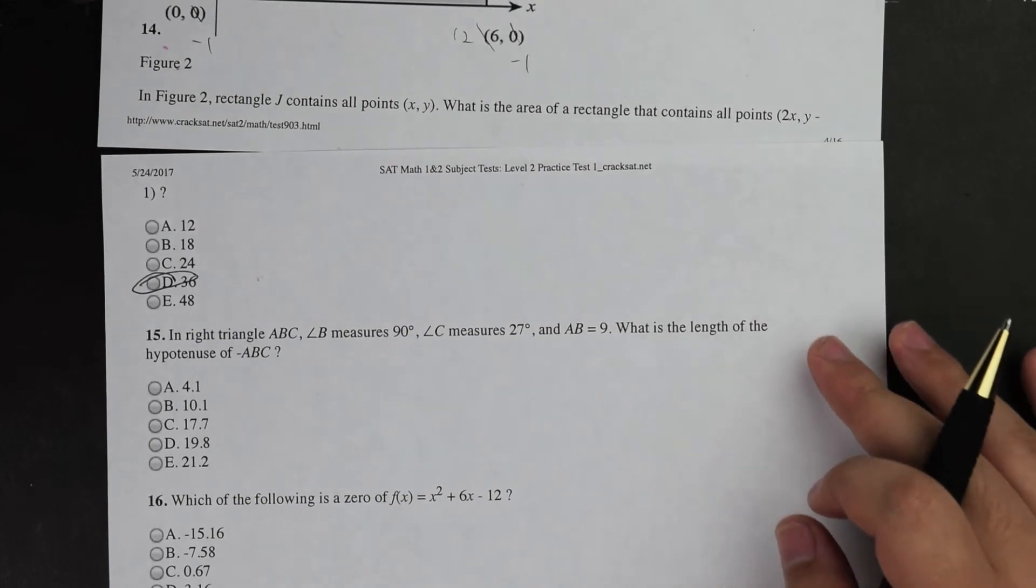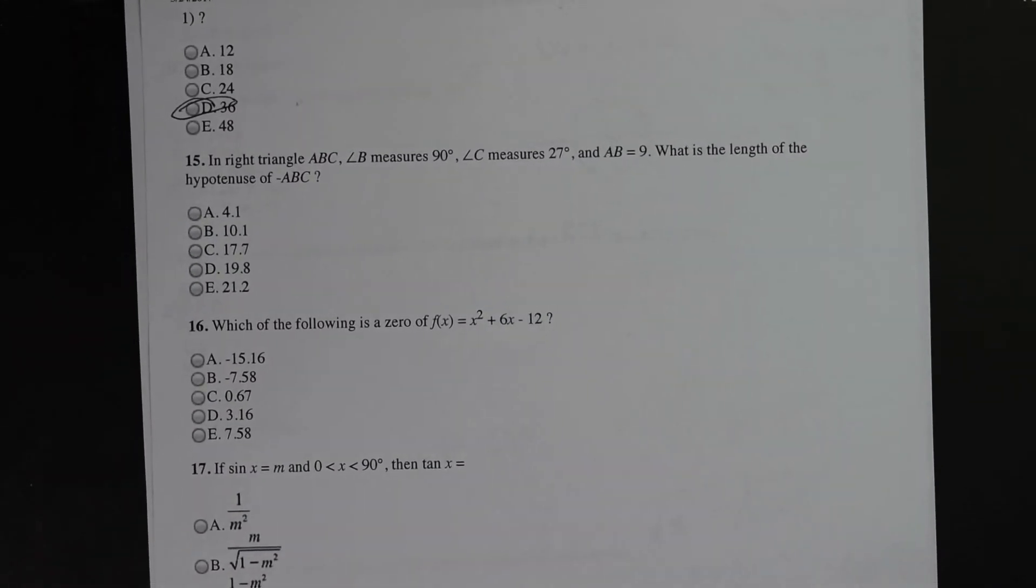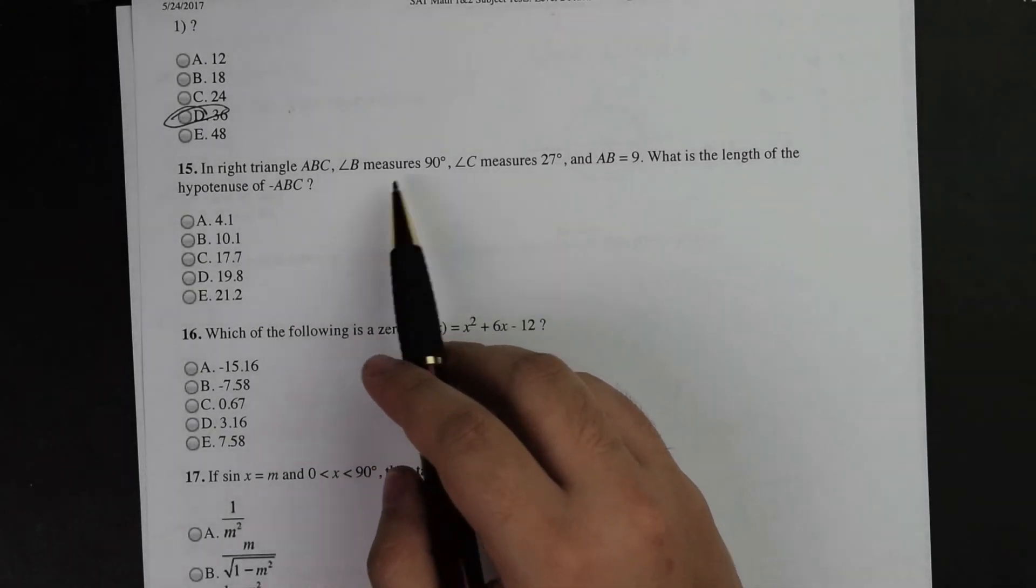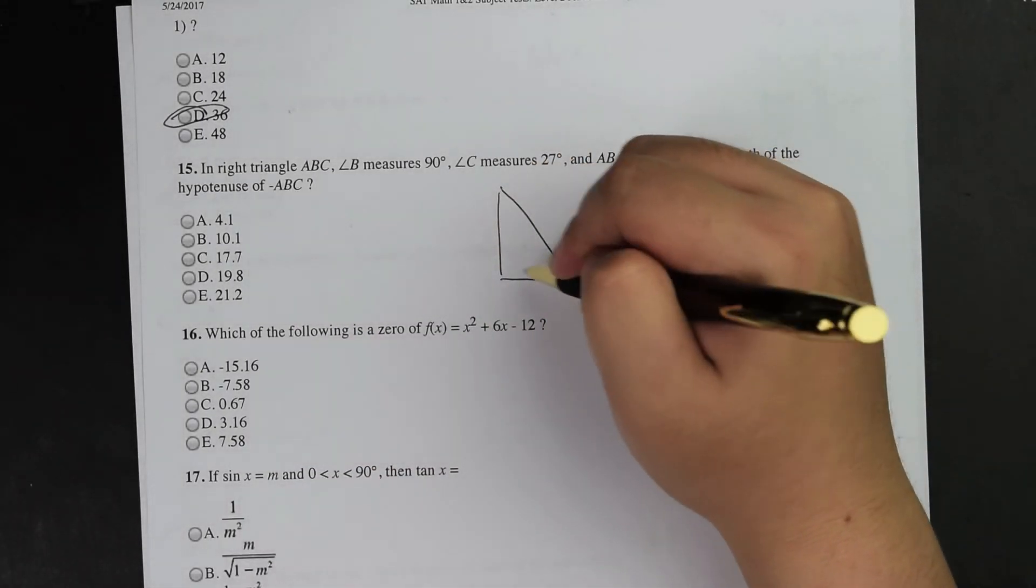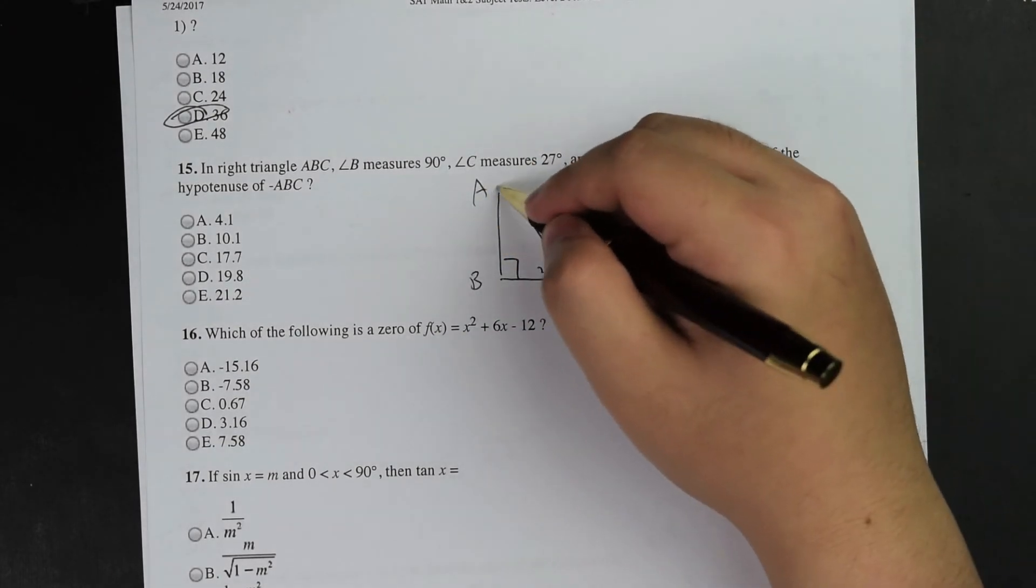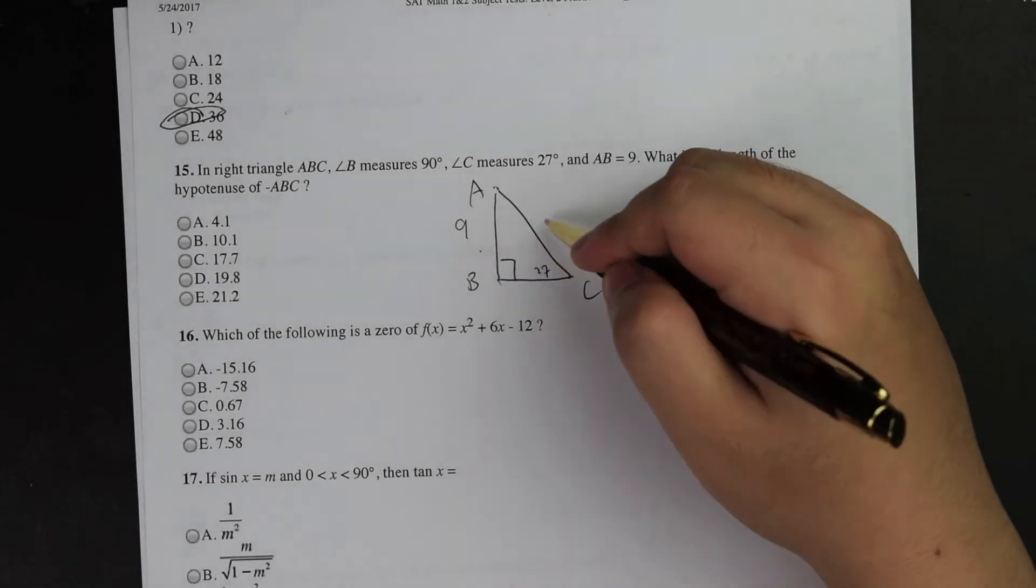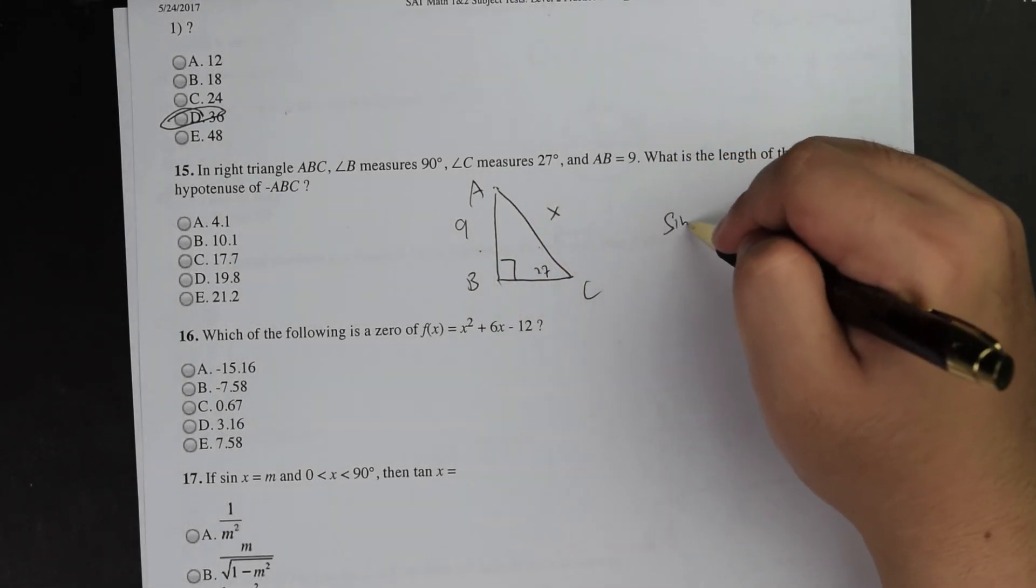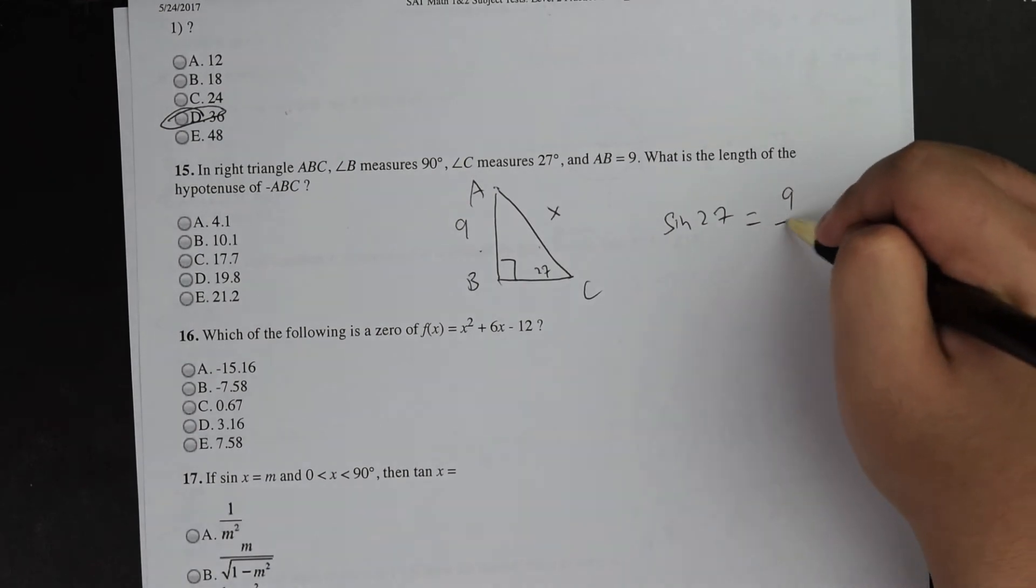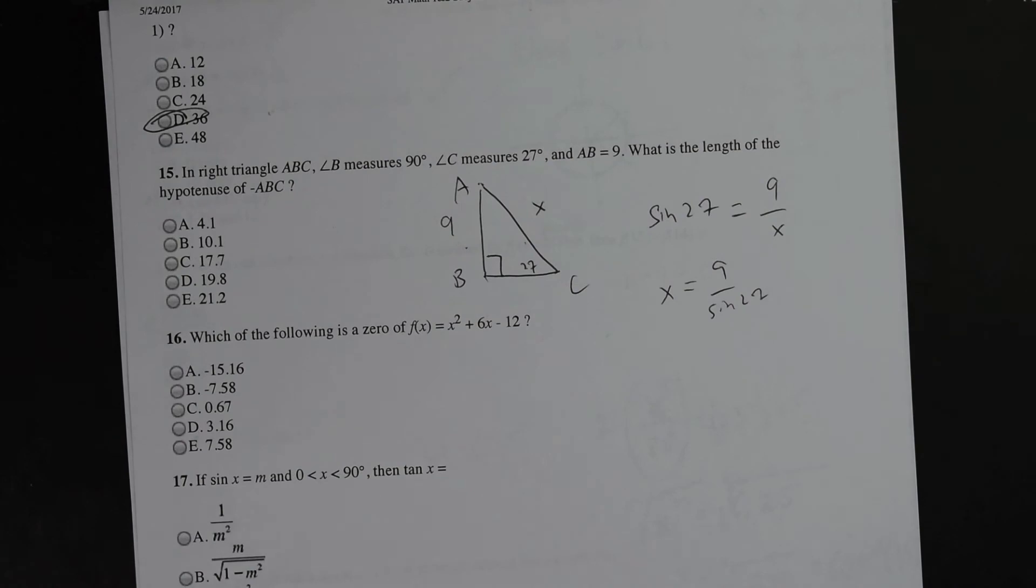Continue on to the last question for today. Number 15. In the right triangle A, B, C, B measures 90, C measures 27, and AB equals 9. What is the length of the hypotenuse? So this is what they want. I'm going to do 27. I need a calculator for this.